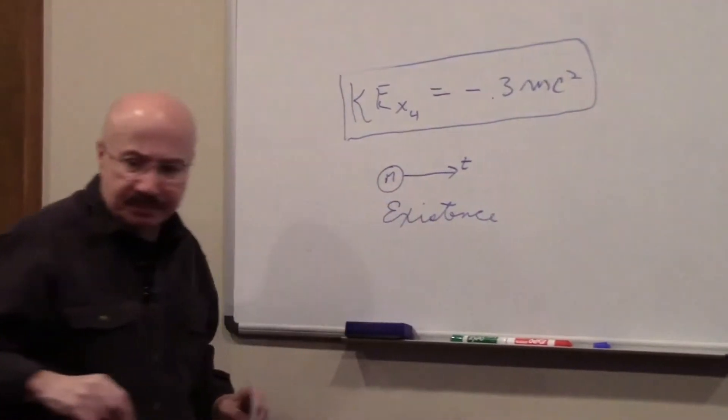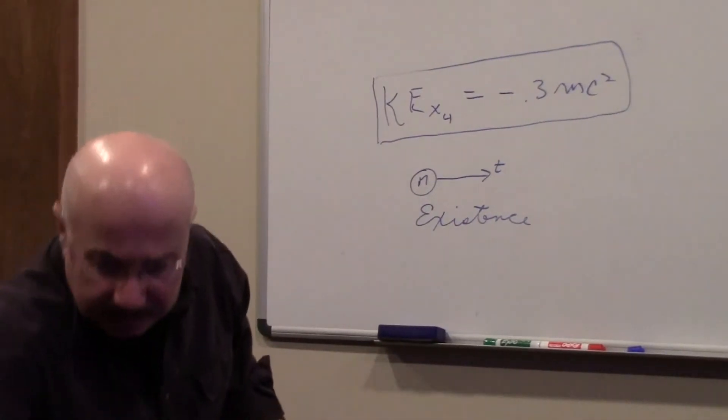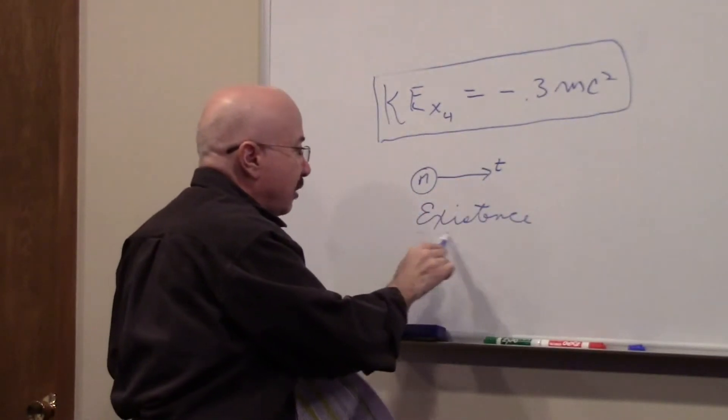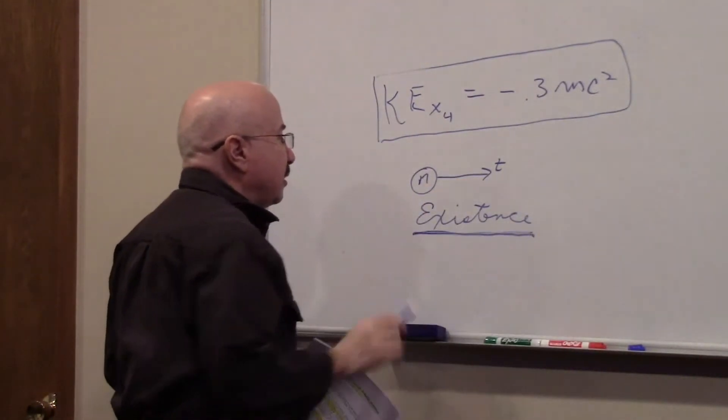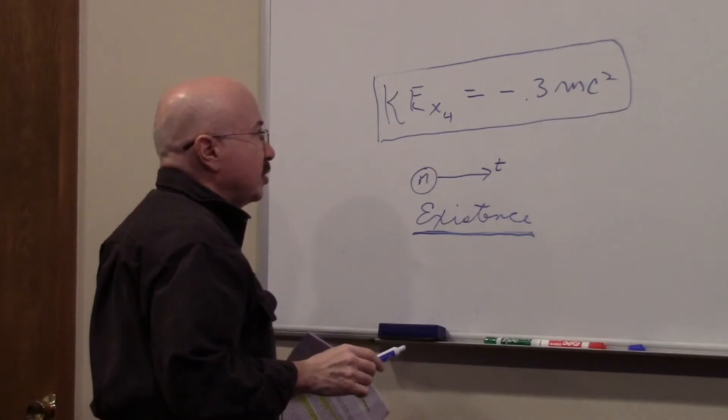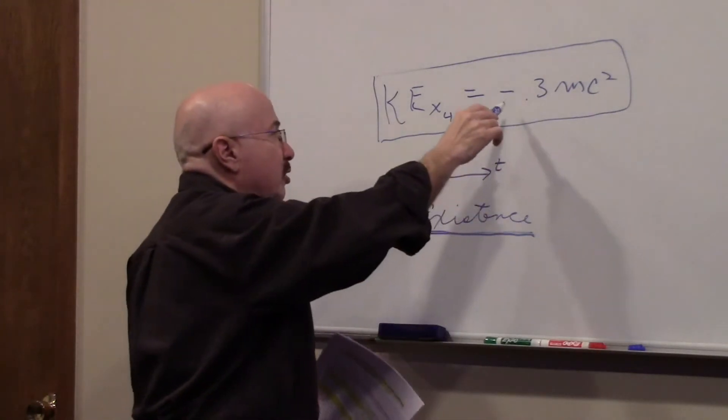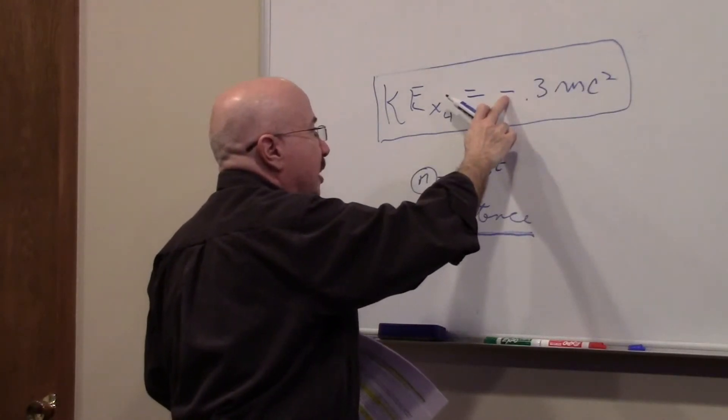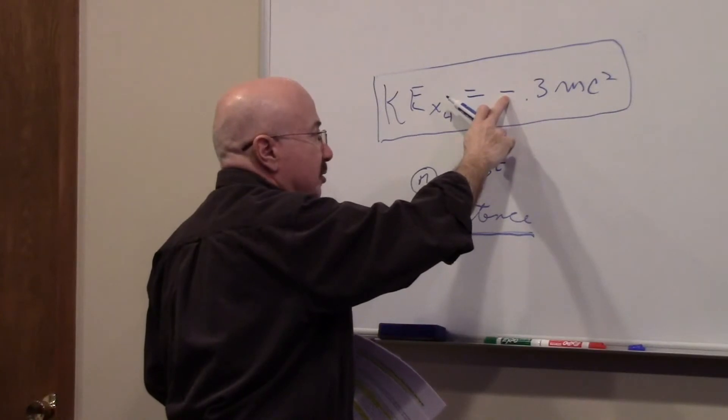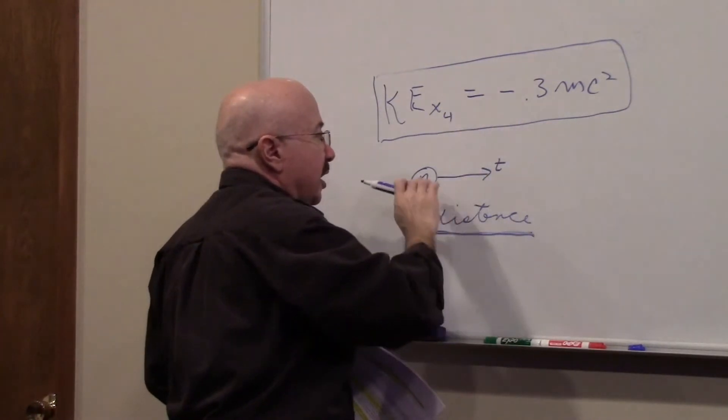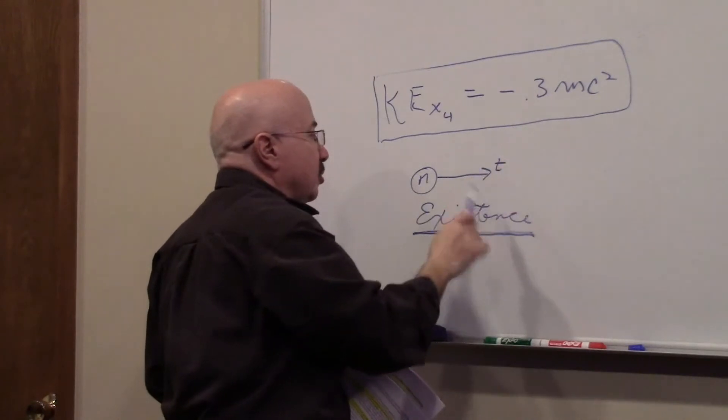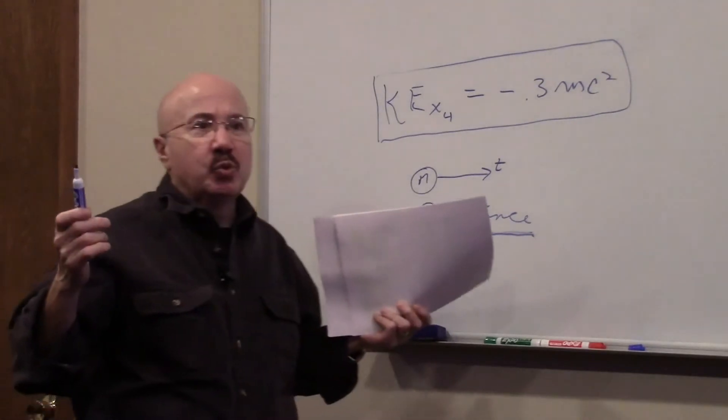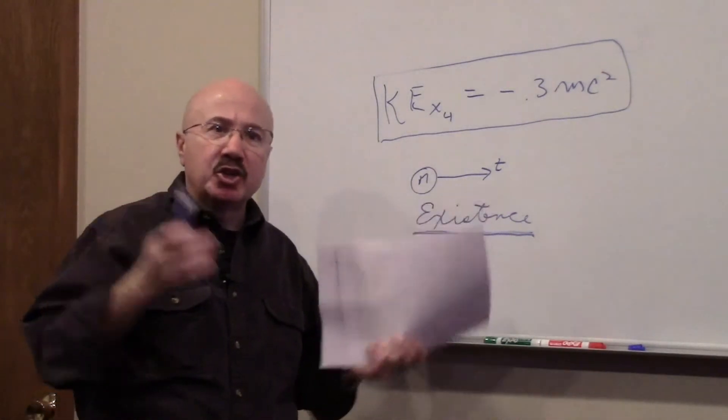This is where we left off. We said a mass is traveling in time, and traveling in time means, by definition, existence. And to do that, it requires energy in this magnitude. The negative sign I interpret to mean it requires energy. So it has a kinetic energy and it's requiring energy to move in time. That's the existence equation. But where is the energy coming from?